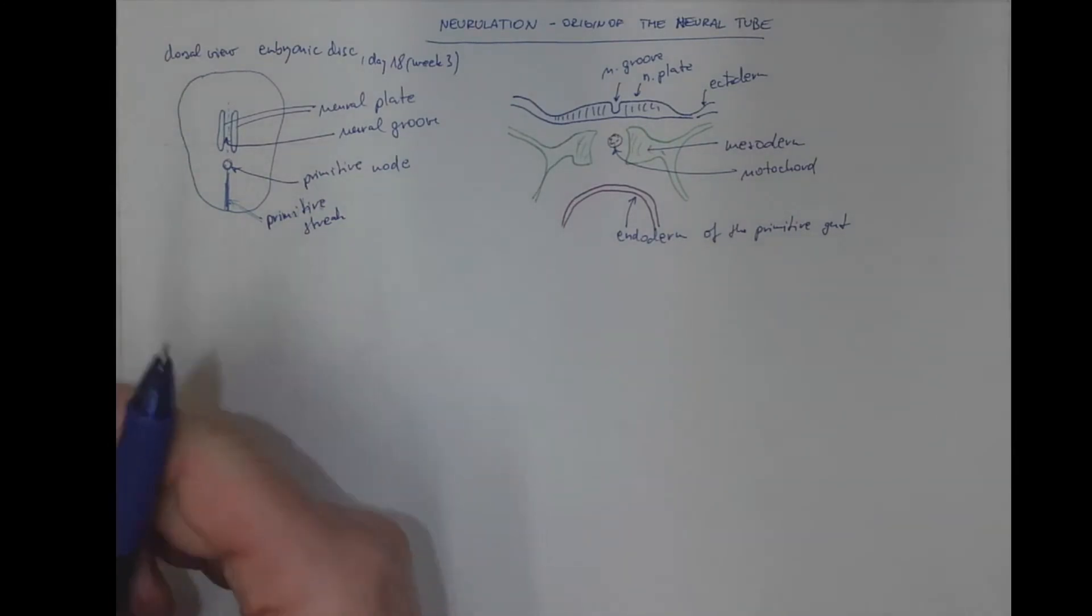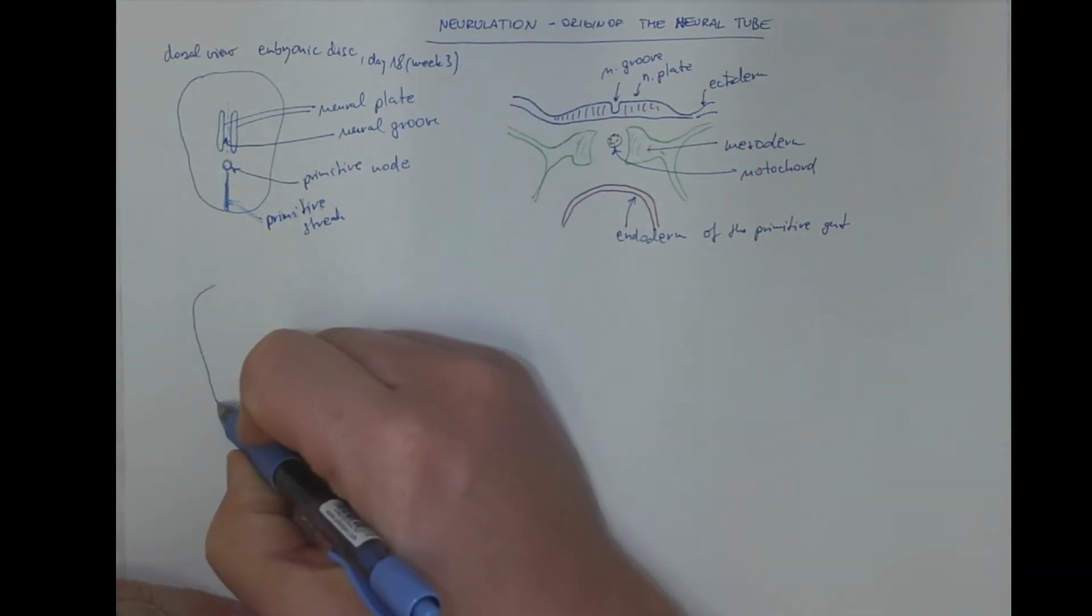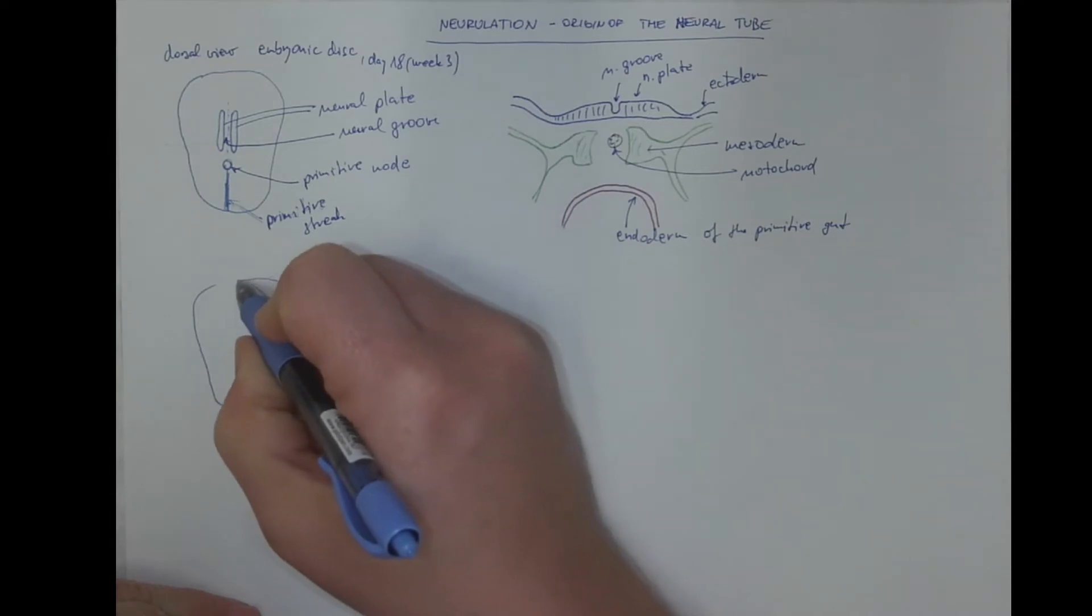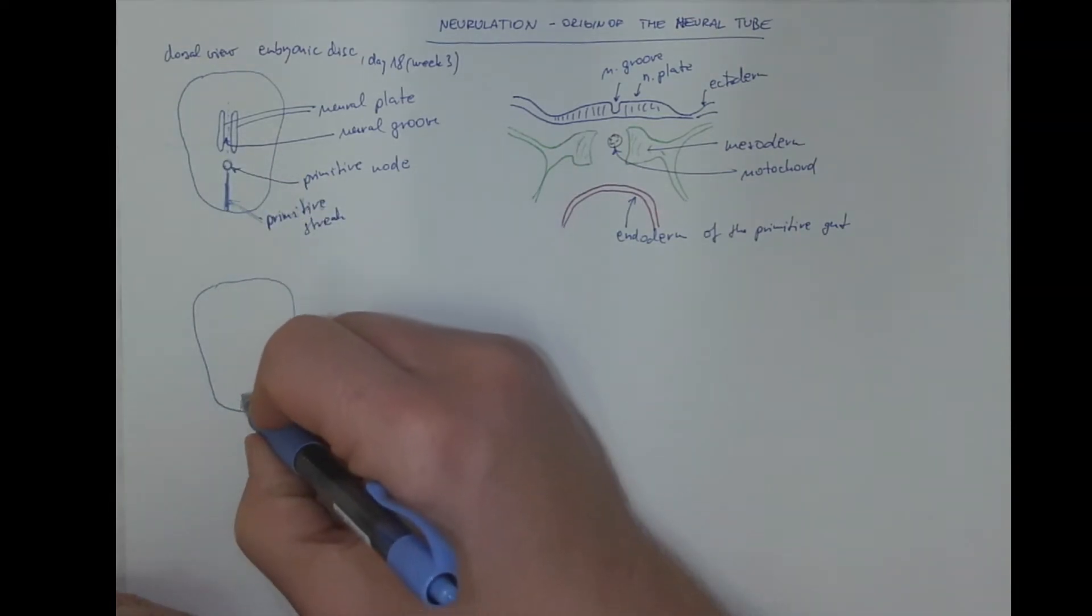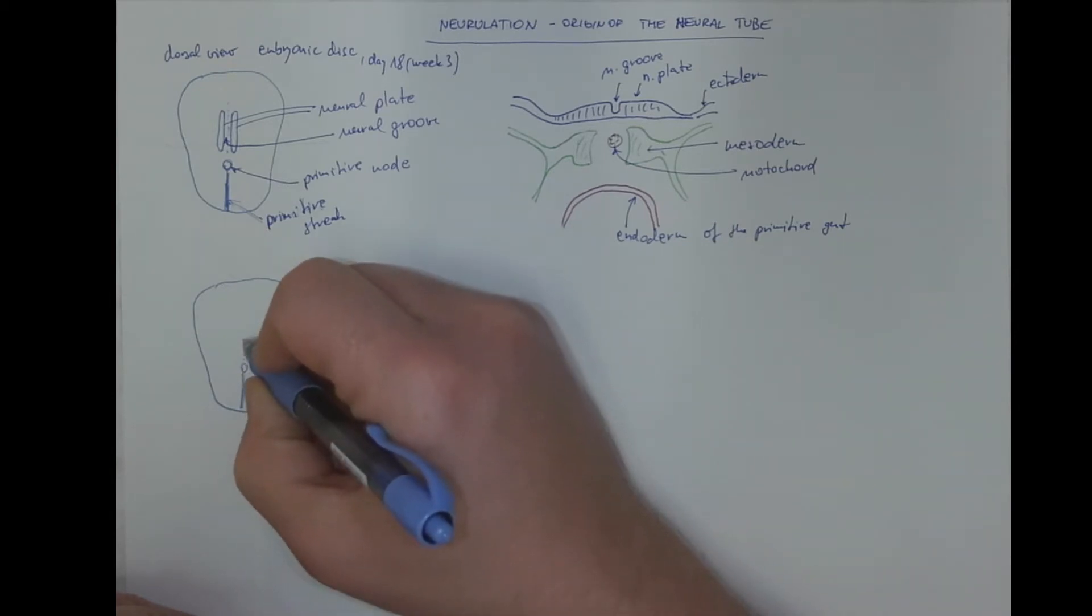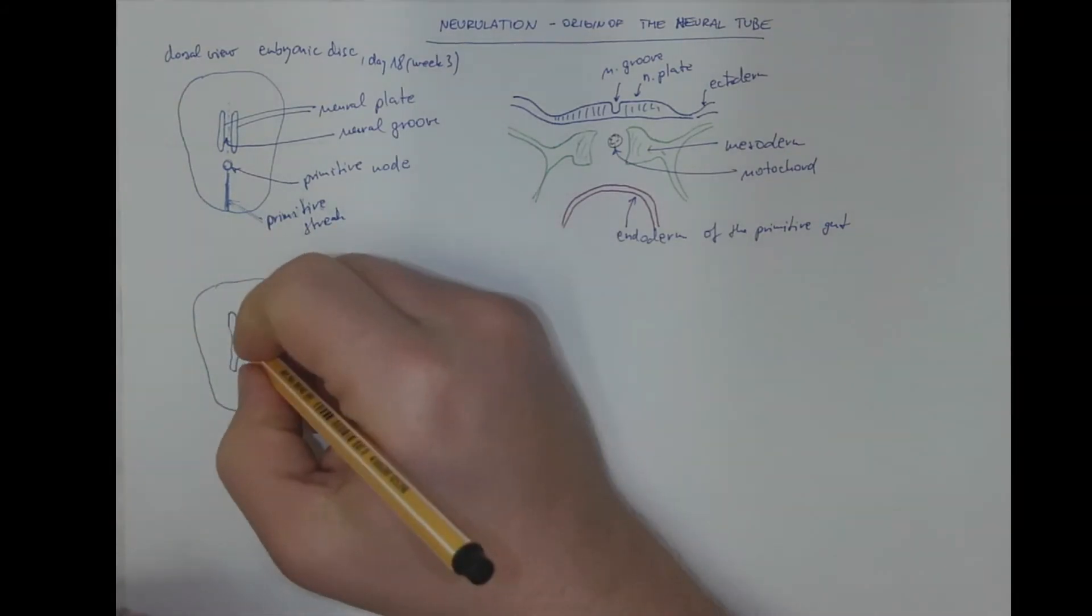A few days later, this process carries on by closing the neural groove. So actually, the closure starts in the middle and runs in both directions, anteriorly and posteriorly.